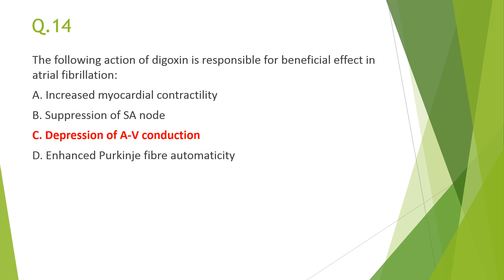Question 14: the action of digoxin responsible for beneficial effect in atrial fibrillation is C — depression of AV conduction. Digitalis causes delay in AV conduction; in atrial fibrillation the atria contract at 400 to 500 per minute, but these impulses are not passed down to the ventricles because AV conduction is delayed. Ventricular rate must be controlled since rapid ventricular rate is far more harmful to the patient.